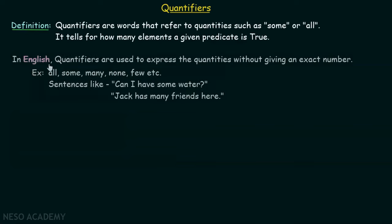In English, quantifiers are used to express quantities without giving an exact number. For example, we use words like all, some, many, none, and few instead of using exact numbers.